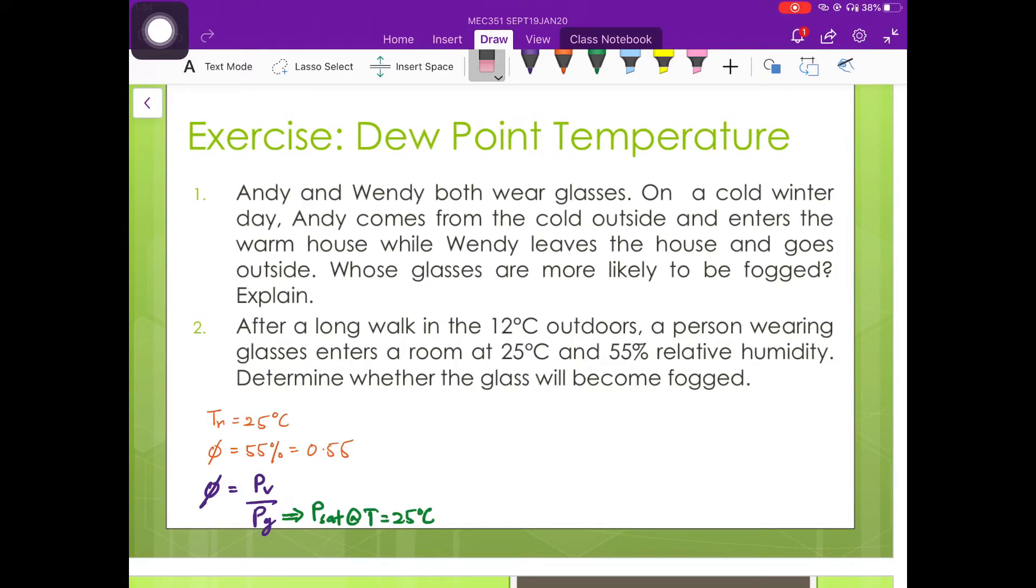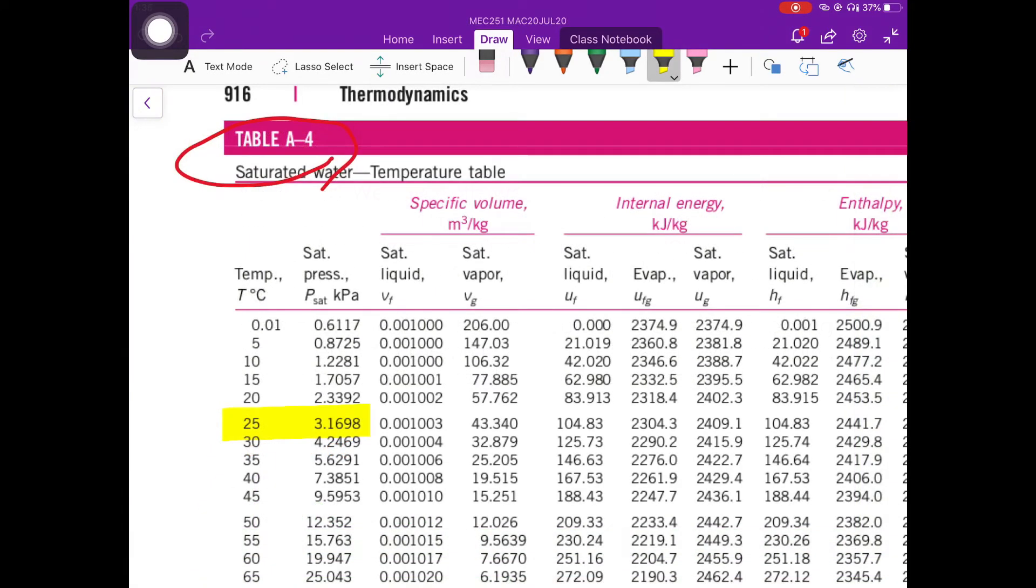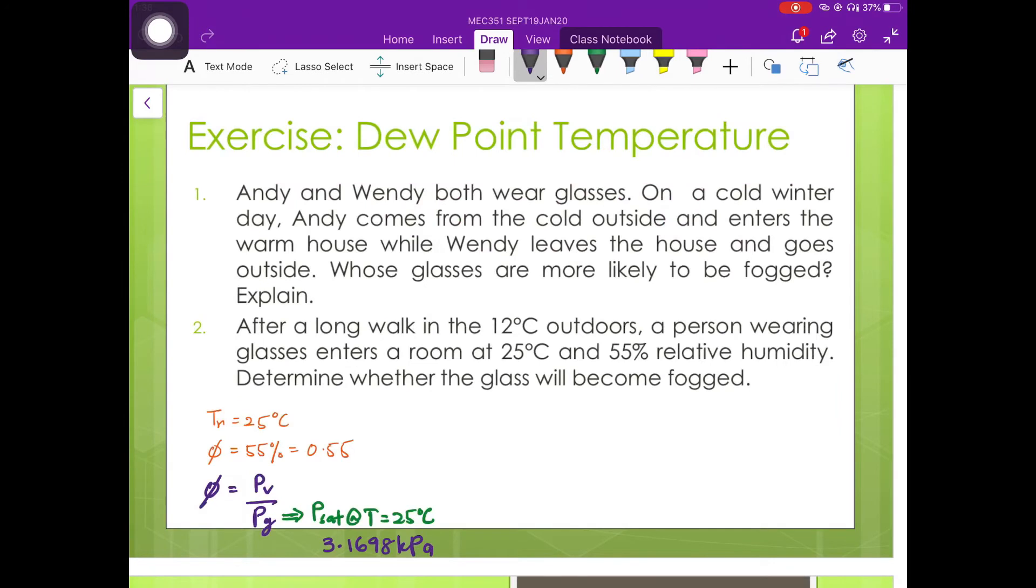Pv is the partial pressure for the water vapor, while the value for Pg is equal to saturation pressure at the temperature of 25 degrees Celsius. From table A-4, at 25 degrees Celsius, the saturation pressure is 3.1698 kilopascals. Therefore, we can determine the value for Pv which is equal to 1.7434 kilopascals.